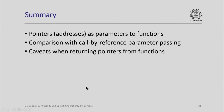In summary, in this lecture we saw that pointers or addresses can be passed as parameters to functions, and this pretty much achieves what call-by-reference parameter passing achieves — in fact, this is what happens behind the scenes when you do call by reference. We also saw that there are some caveats to be aware of when returning pointers from functions. Thank you.